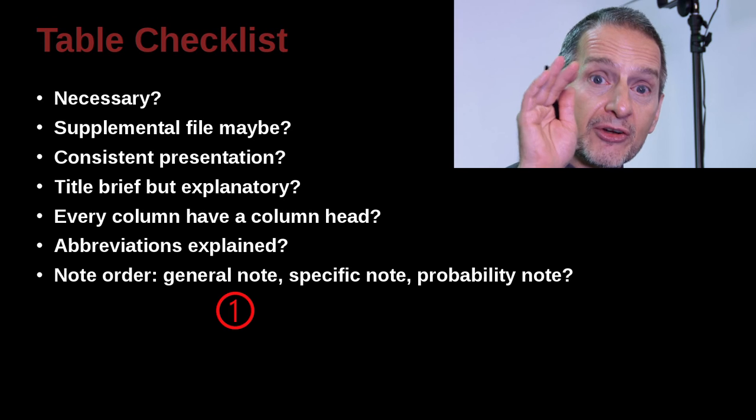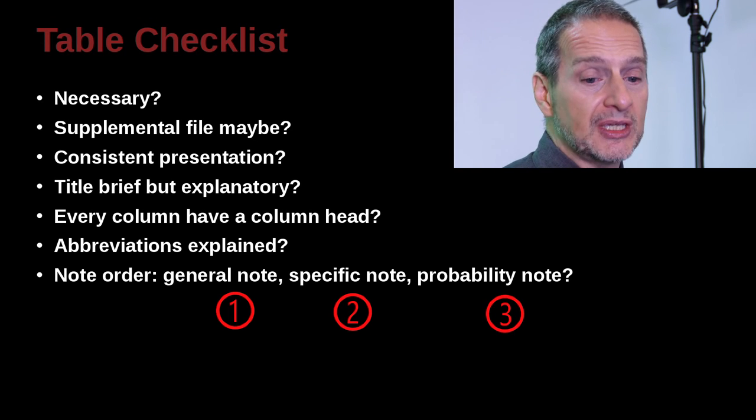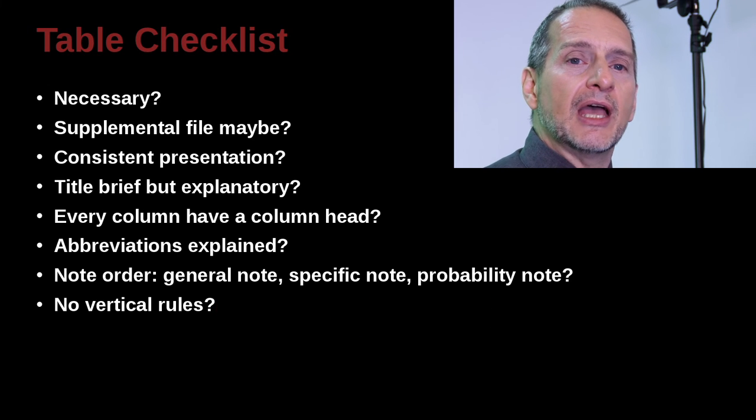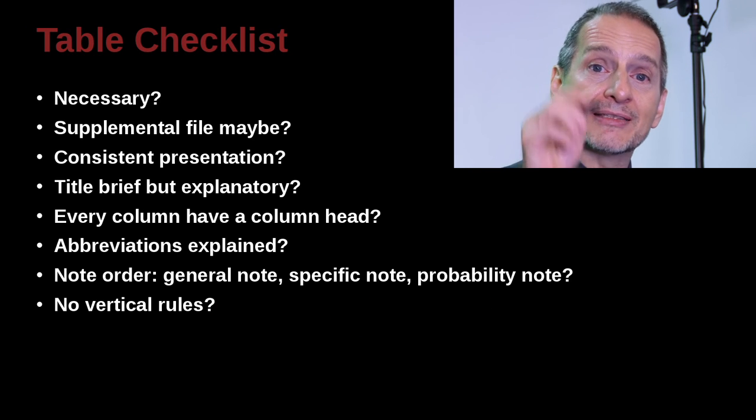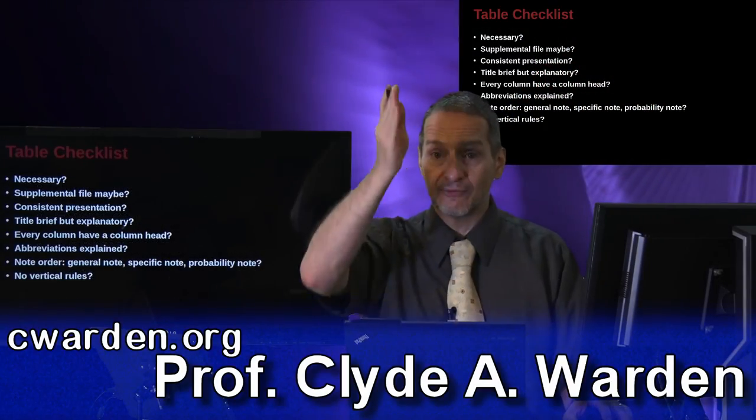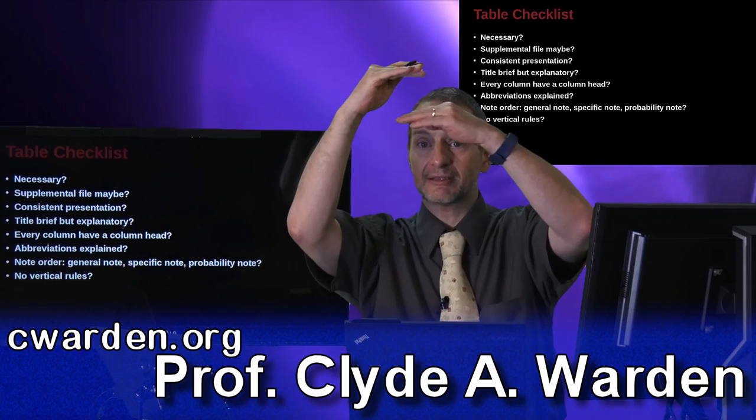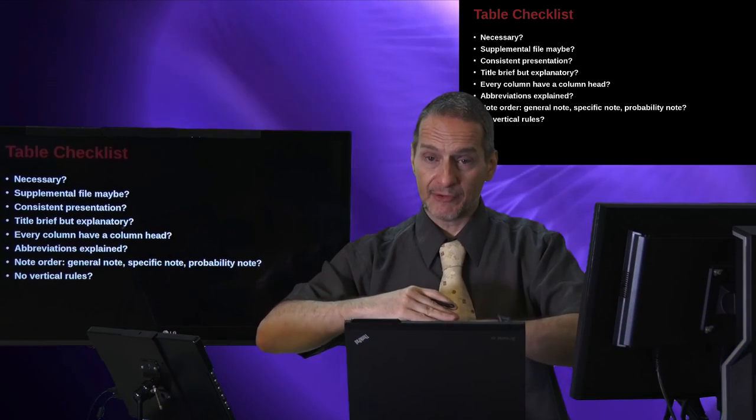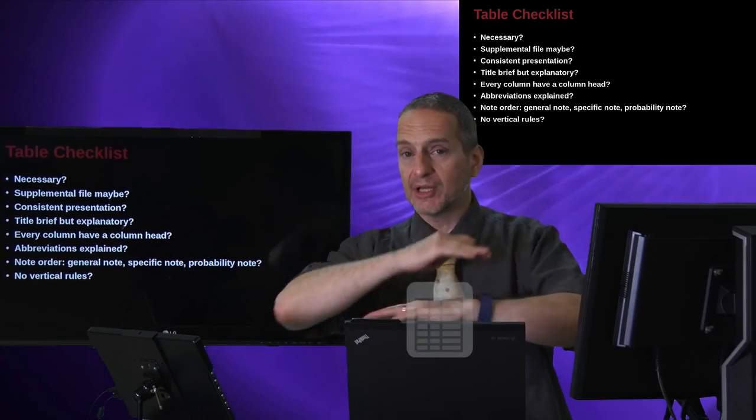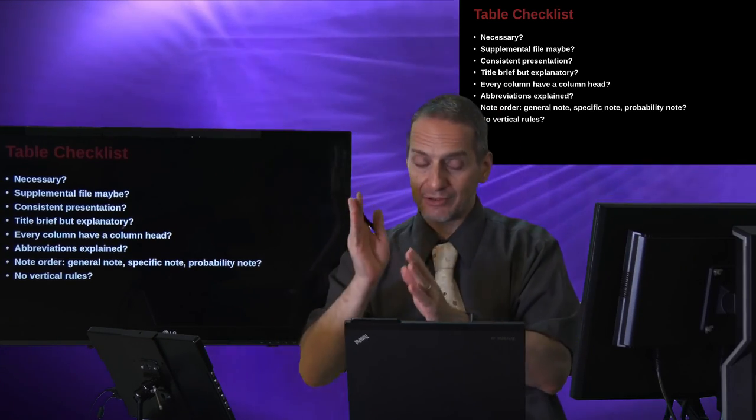Do your notes have an order? That is, do they come general, specific, probability? That's the order they should be in. Did you follow that order? And you should have no vertical lines. That is, inside the table, you should not have vertical lines. You do have some horizontal lines, but it's just at the top and at the bottom of the page, of the table, not everywhere in the table. And no vertical lines, no vertical lines.